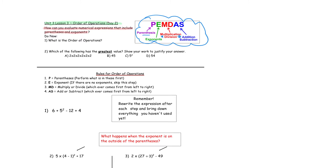How can you evaluate numerical expressions that include parentheses and exponents? That's going to be our focus for today. First, we're going to take a look at the Do Now. Number one says: what is the Order of Operations? So take a minute and fill that in. The Order of Operations are rules that tell us which math procedures to perform first to evaluate or solve a math expression.